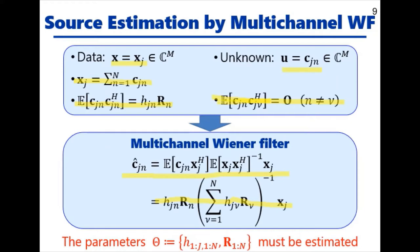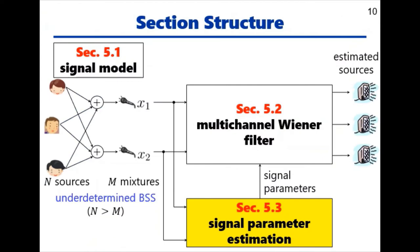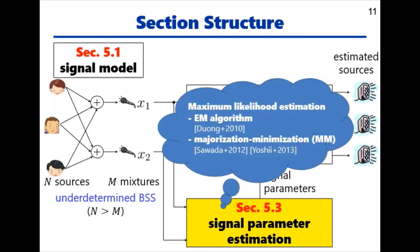Here, the parameters H and R must be estimated. Now we move on to Section 5.3, Signal Parameter Estimation. It is based on the Maximum Likelihood method. Here we introduce two algorithms, namely the EM algorithm and the Majorization Minimization algorithm.